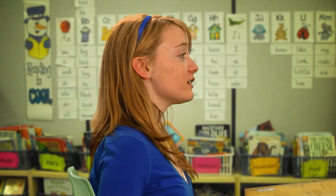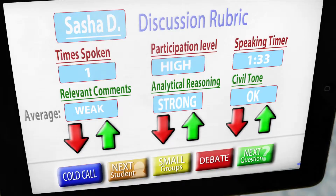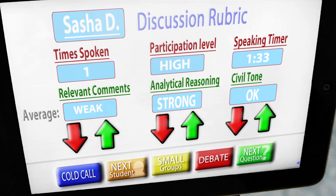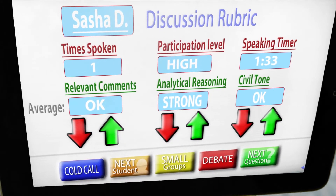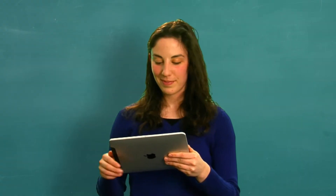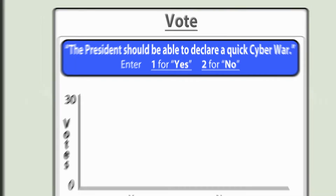Look at this: as Sasha is talking, her personal discussion rubric automatically pops up on the teacher's screen. The brilliant Sasha sometimes wanders off subject — but not today. After a while, the teacher thinks that now might be a good time to conduct a quick straw poll. And this happens.